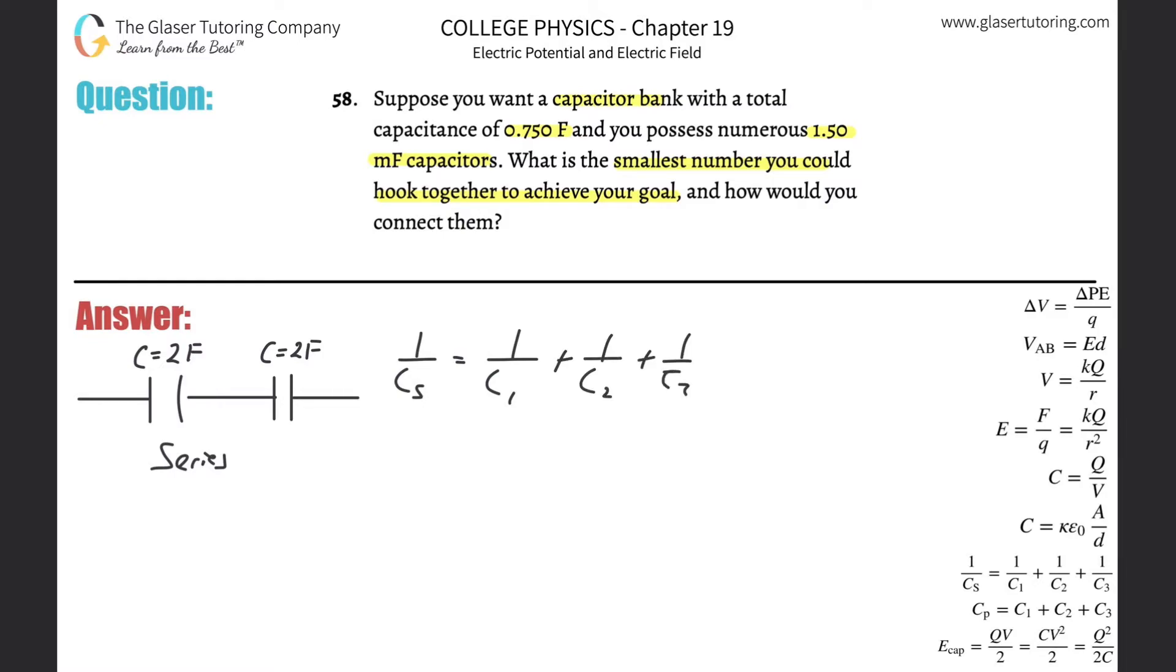So 1 over the total is going to equal 1 over 2 plus 1 over 2. What's one-half plus one-half? It's going to be 1. We know then that the equivalent capacitance here in series is basically equal to 1. If I had to solve this algebraically, I would just do a little cross multiplication - 1 over 1 obviously equals 1.